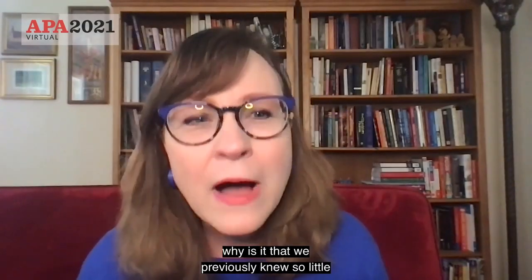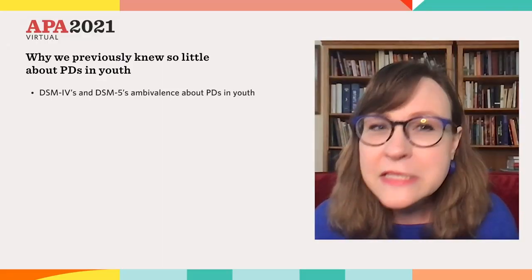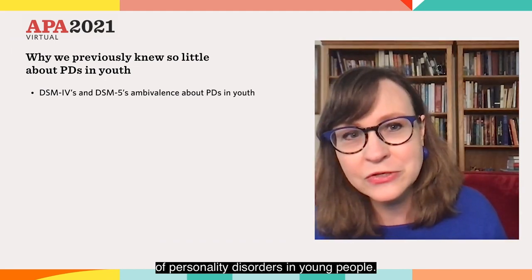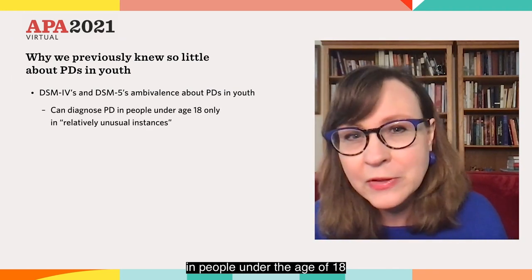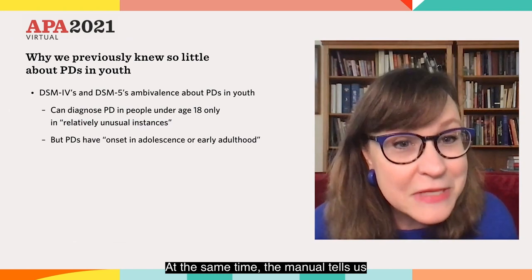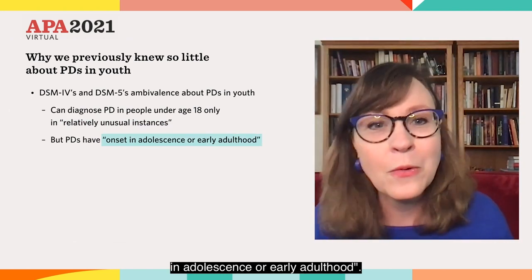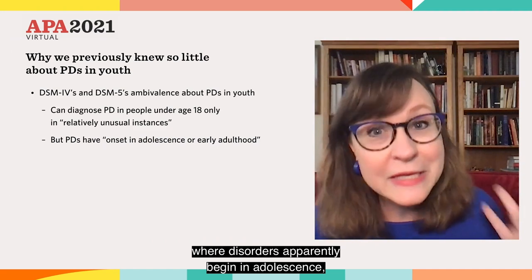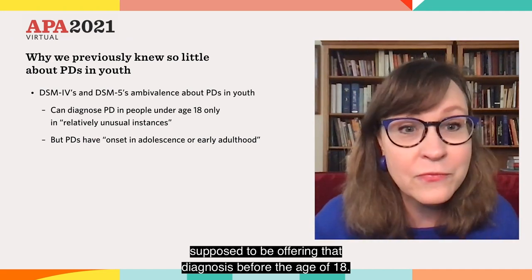So first, why is it that we previously knew so little about personality disorders in youth? DSM-4 and DSM-5 both present a very ambivalent picture of personality disorders in young people. We're told in the manual that we can diagnose personality disorder in people under the age of 18 only in relatively unusual instances. At the same time, the manual tells us that personality disorders have their onset in adolescence or early adulthood. So we're left with this odd picture where the disorders apparently begin in adolescence, and yet we're not, in most cases, supposed to be offering that diagnosis before the age of 18.